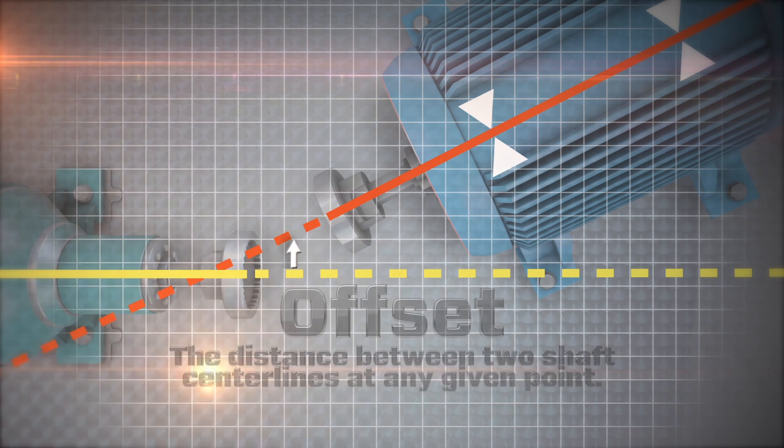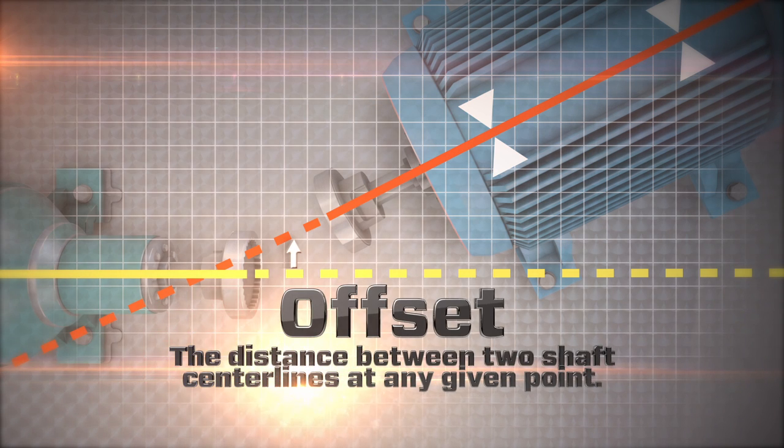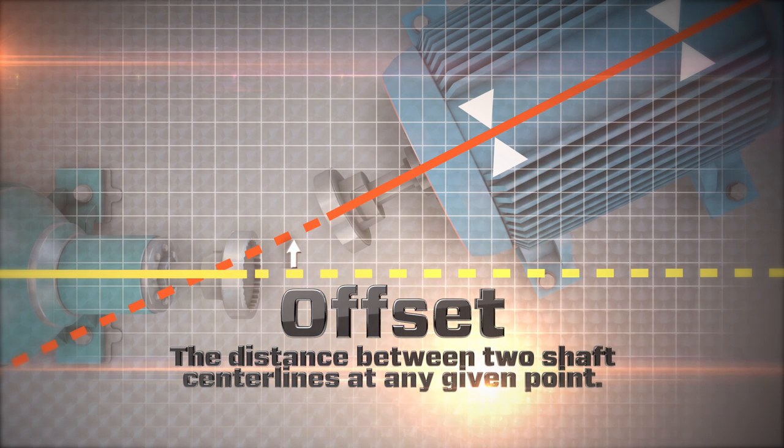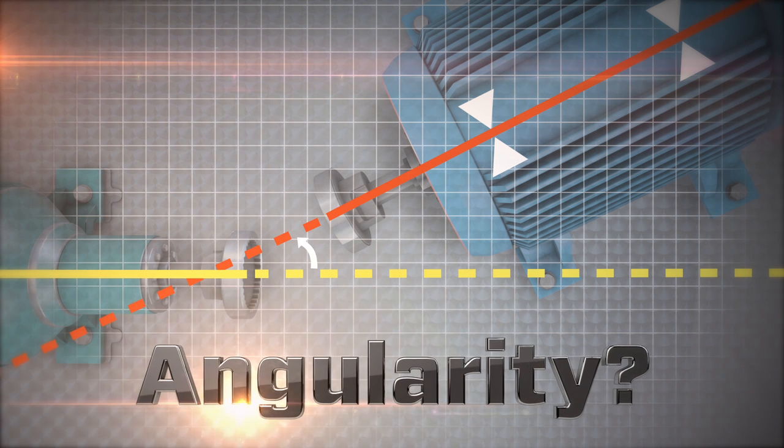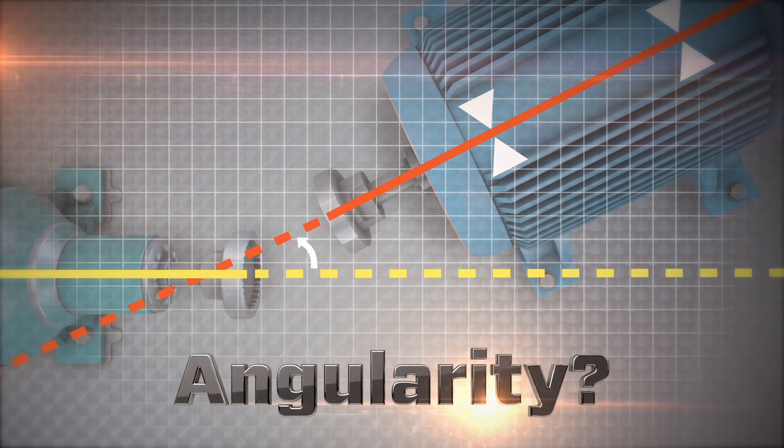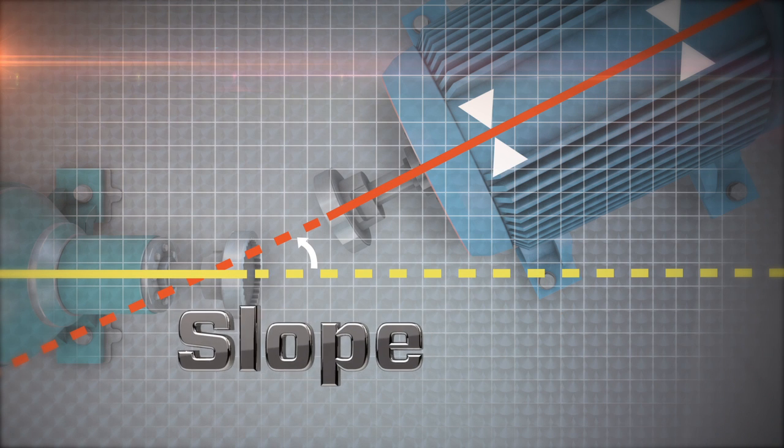Notice that there is also angularity between the shaft centerlines. What is angularity? You may have heard it before as slope or rise over run, just as in the pitch of a roof. Angularity between shafts is expressed as the amount of change in the offset as we go along the shaft centerlines.